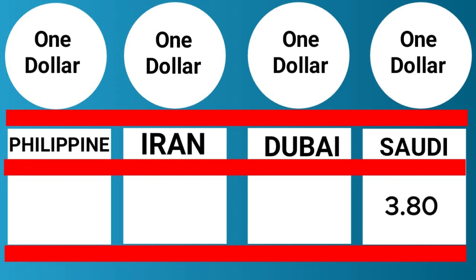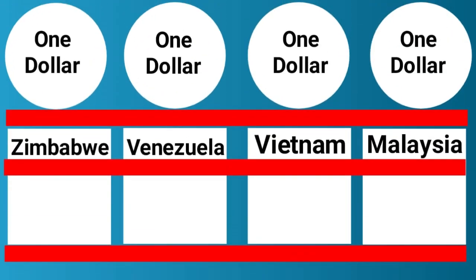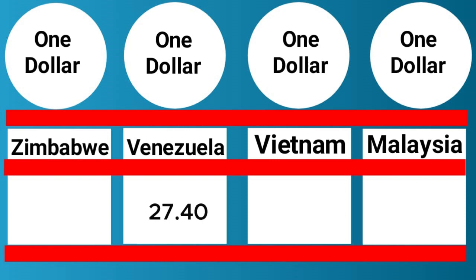And 1 US dollar is equal to 3.80 Saudi riyals. 1 US dollar is equal to 362 Zimbabwean dollars. 1 US dollar is equal to 27.40 Venezuelan bolivars.